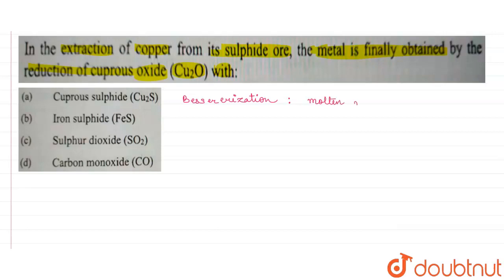We get a molten mat and that molten mat is actually added to a Bessemer converter. We can say that this is added to the Bessemer converter.